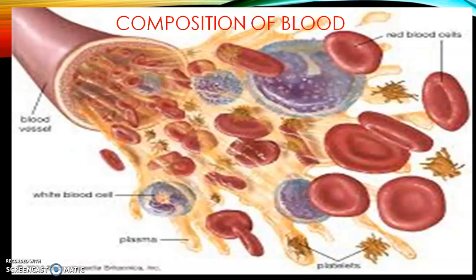We have four to six liters of blood circulating in our body. Blood is of two types: pure blood, which is rich in oxygen and is always carried by arteries, and impure blood, which is rich in carbon dioxide and is always carried by veins. One exception is the pulmonary artery and pulmonary vein, which work in reverse — pulmonary arteries carry impure blood whereas pulmonary veins carry pure blood. Oxygen-rich blood is called oxygenated blood and carbon dioxide-rich blood is called deoxygenated blood.